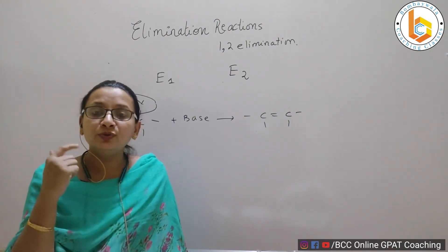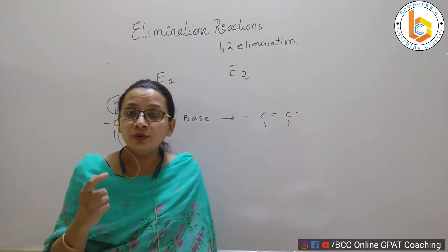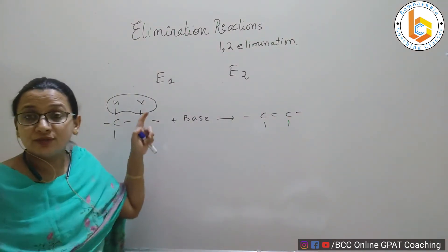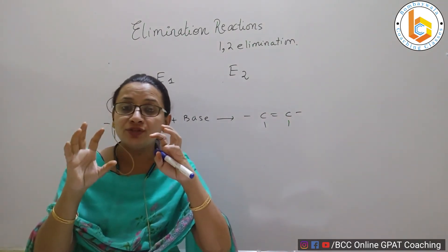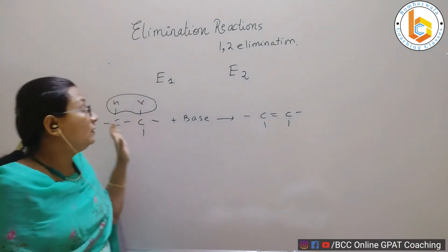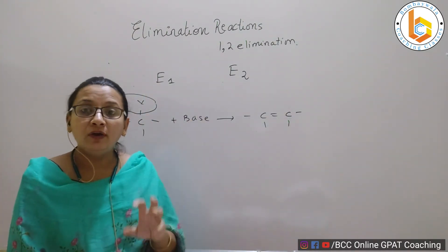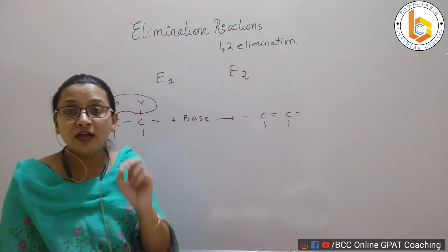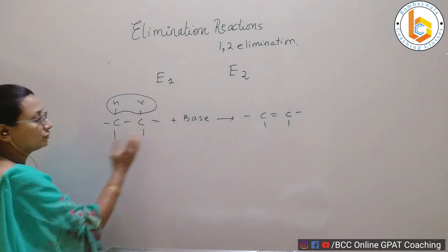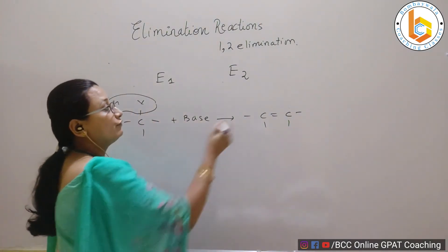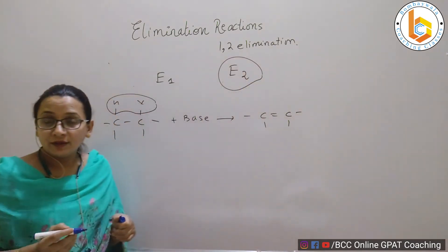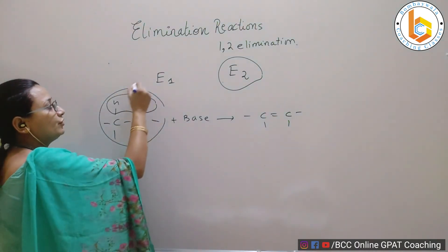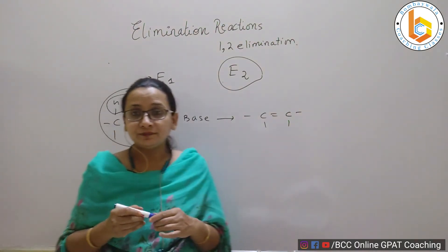Alkyl halides have two characteristic reactions: substitution and elimination. Adjacent groups are removed from the alkyl halide in elimination. When the rate of reaction depends on both the alkyl halide and the base, it is referred to as elimination second order (E2). When the rate of reaction depends only on the alkyl halide, it is referred to as elimination first order (E1).